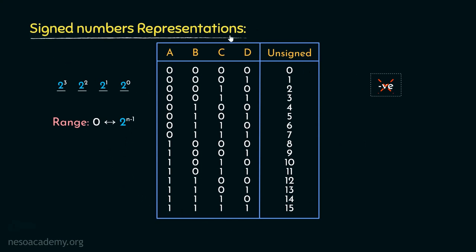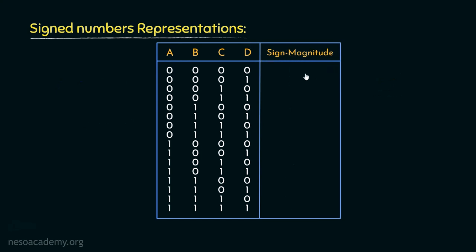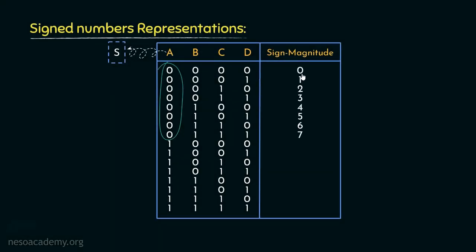Let's now begin with the signed representations, starting with the signed magnitude form. In signed magnitude form, the most significant bit (MSB), also known as the highest order bit, is the sign bit — the MSB signifies the sign of the number. If the MSB is 0, the numbers are positive. Since this bit place signifies the sign, using the remaining 3 bits we can represent 8 values: 0, 1, 2, 3 till 7. These are the positive ones. In the remaining 8 patterns the MSB is 1, meaning the numbers are of negative magnitude — 1000 signifies minus 0, and the subsequent ones are minus 1, minus 2, and so on till minus 7.